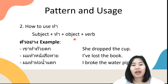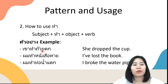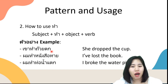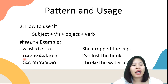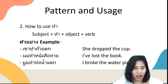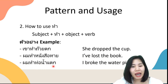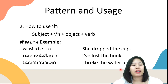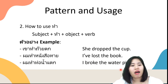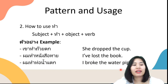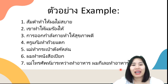How to use the word ทำ: put the subject, then ทำ, then object and verb. Normally we use ทำ to say someone did something wrong — like with verbs ตก, หาย, แตก. Example: เขาทำถ้วยตก — she dropped the cup.